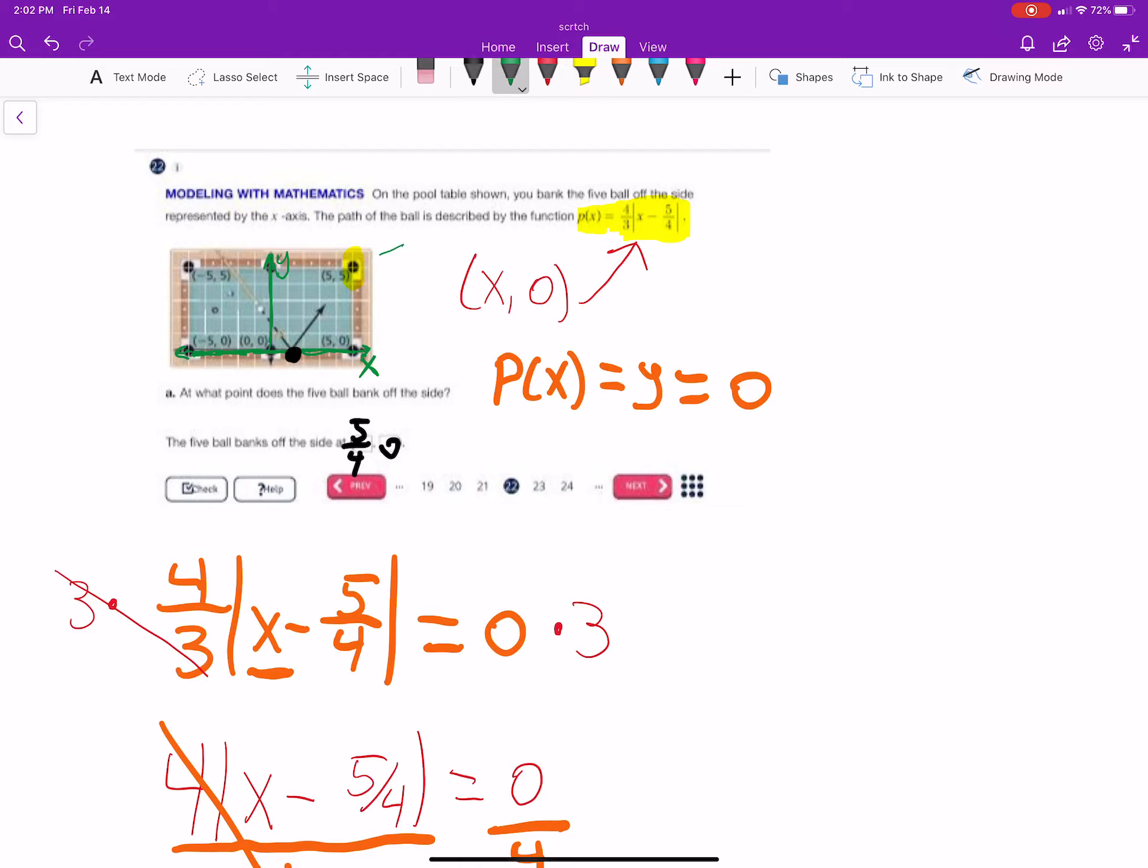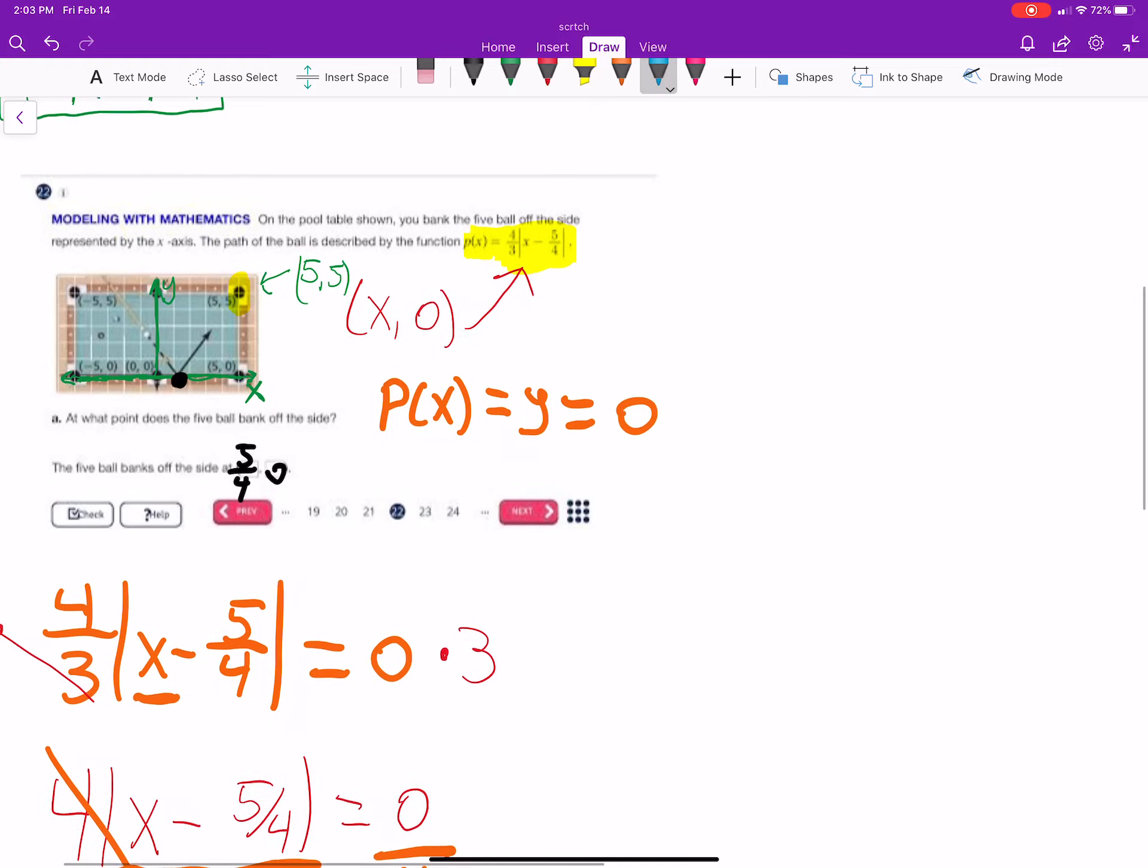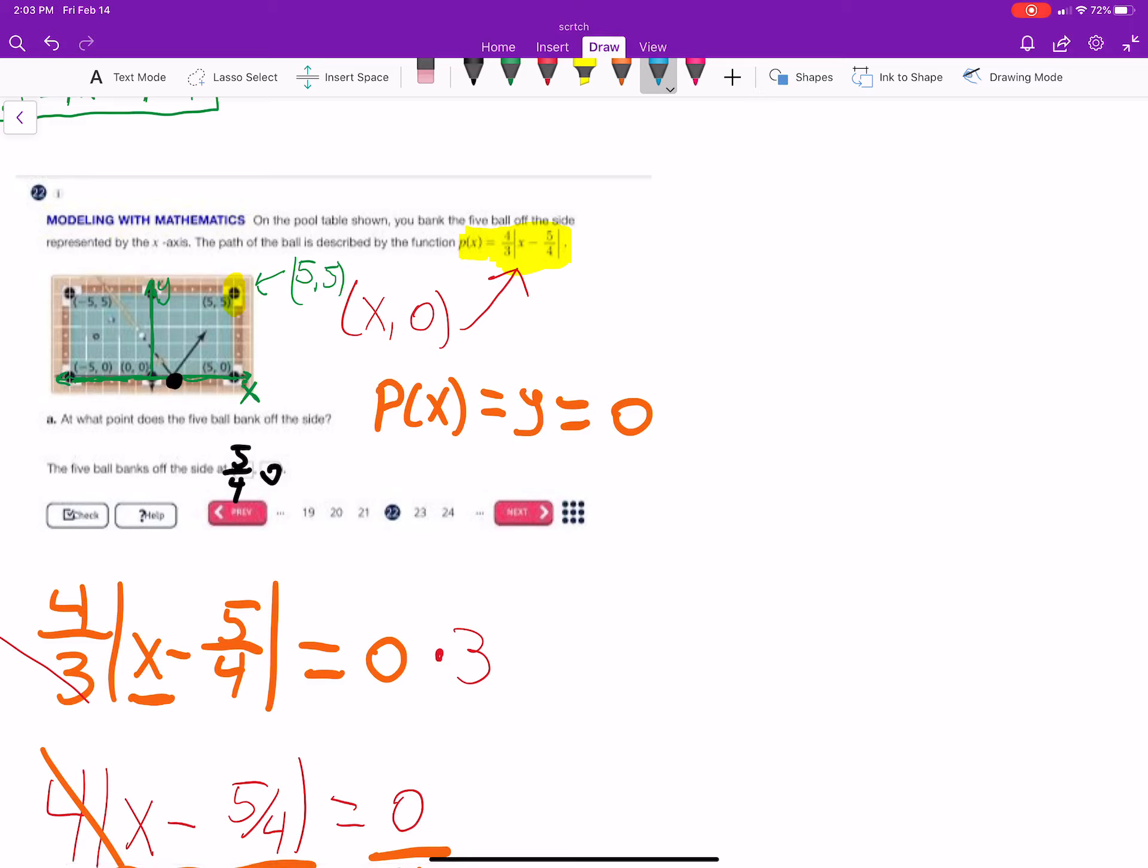Well, let's note that this point is 5 comma 5. And we know the path that describes the ball is 4 thirds, this highlighted part, 4 thirds absolute value of x minus 5-fourths. So, one way to solve this problem is just to ask, is 5 comma 5 a solution?